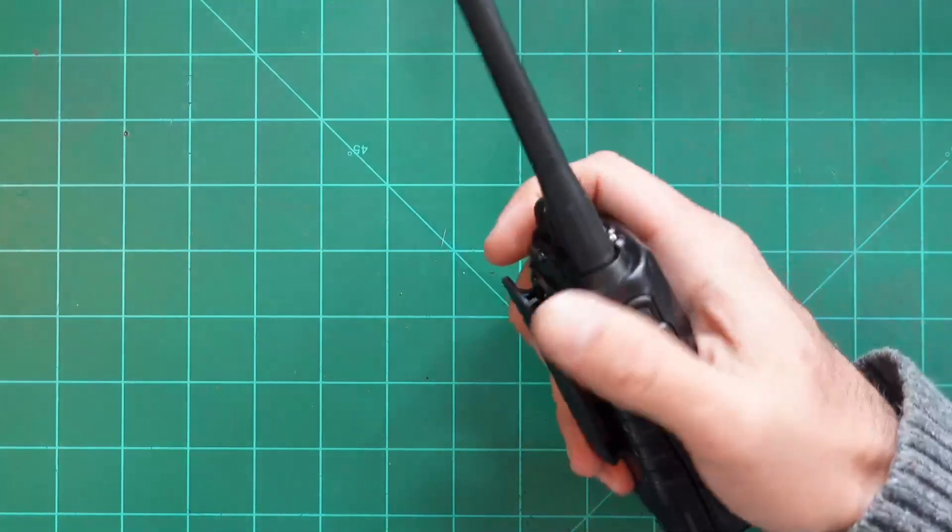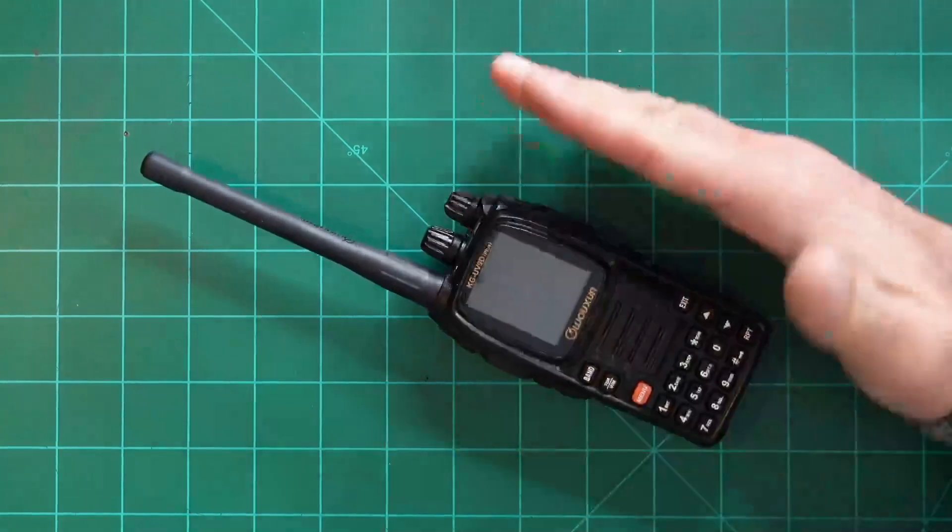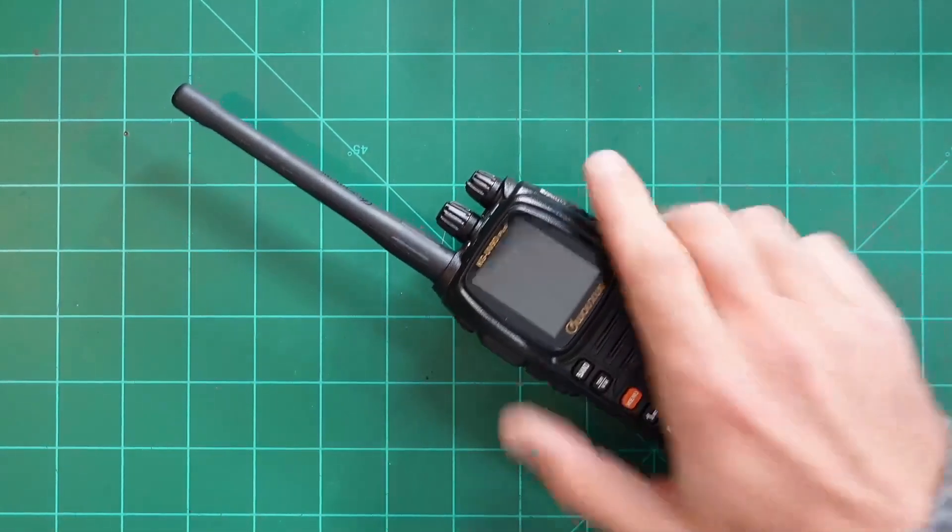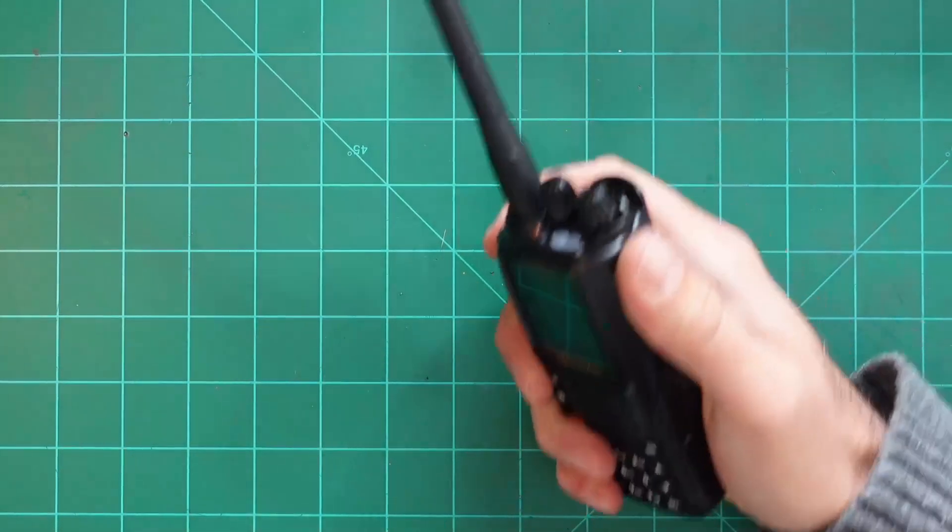I would have to say that the Yaesu actually feels kind of bulky and almost squared is a good way to put it. And this is more rounded and it actually feels like it fits a lot better.